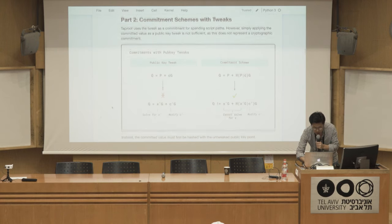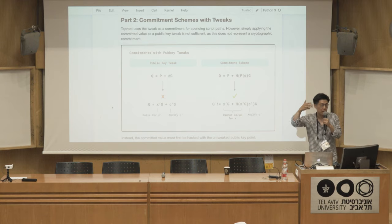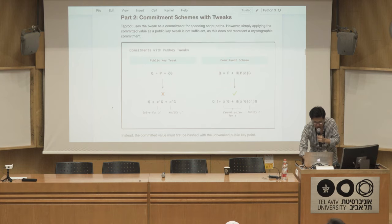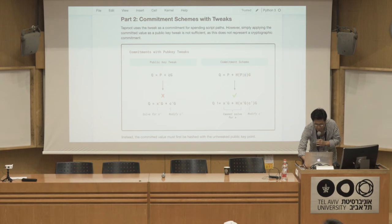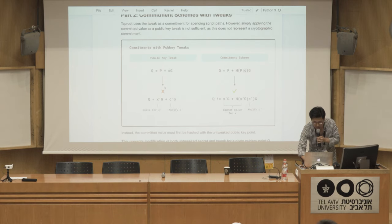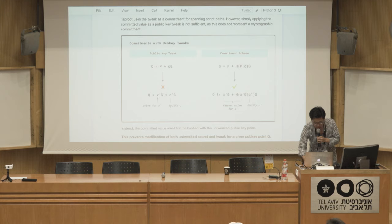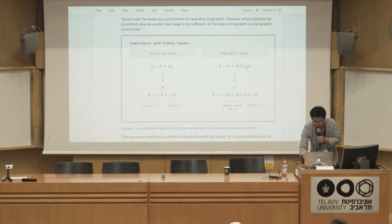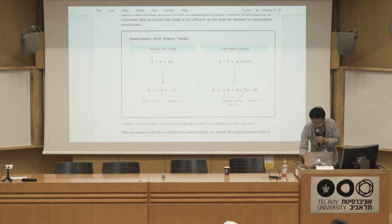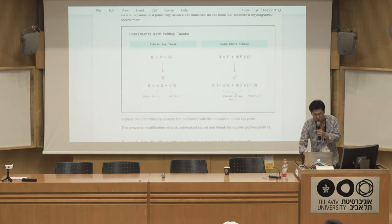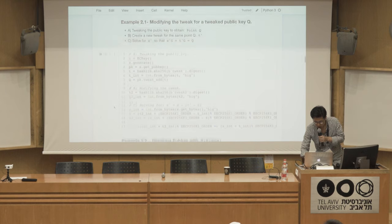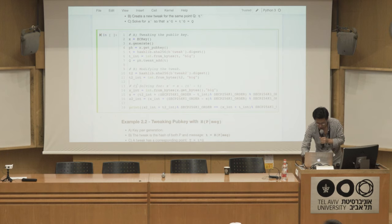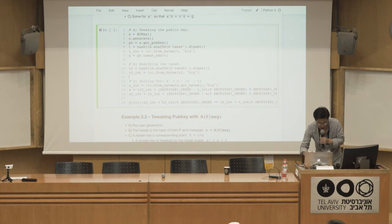Why are tweaks interesting? Taproot is about committing a script structure into the pubkey. In a naive fashion, my tweak is just a commitment C — but that's a broken commitment scheme because I can trivially modify C and solve for the private key of P. The way to solve that is to put the internal key and commitment inside a hash expression, so the secret is both inside the hash and outside. If I modify C, I cannot solve for the private key. This is how we create a valid commitment scheme by tweaking a pubkey.